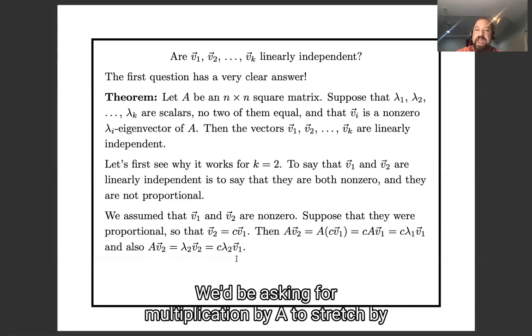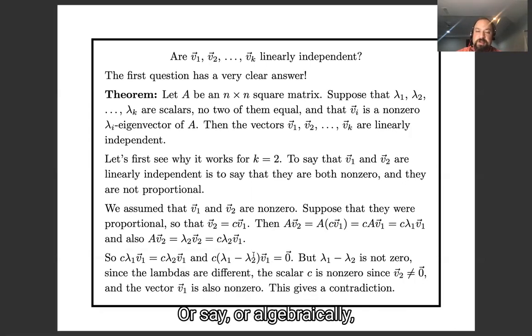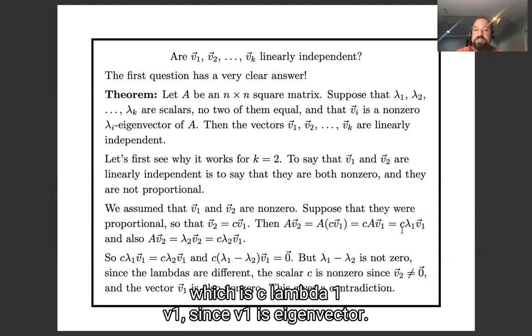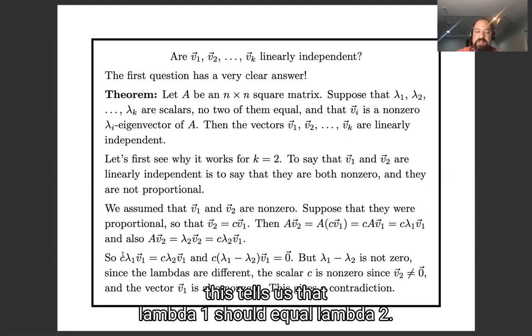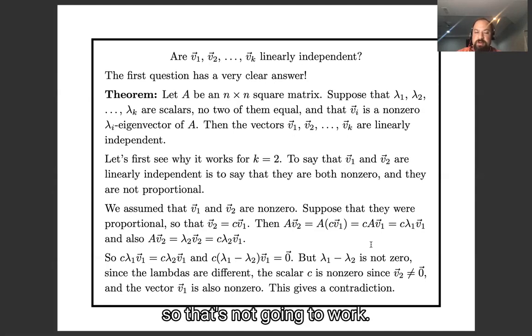We'd be asking for multiplication by A to stretch by both the factor of λ₁ and the factor of λ₂ on the same line. Or to say a little bit more algebraically, we'd have Av₂ = c v₁. You can pull out the scalar c, so that's c Av₁, which is c λ₁ v₁, since v₁ is an eigenvector. Also Av₂ is λ₂ v₂, since v₂ is an eigenvector. This tells us that λ₁ should equal λ₂, but λ₁ and λ₂ are distinct, so that's not going to work. Okay, so that's arguing that this doesn't happen for k equals two.